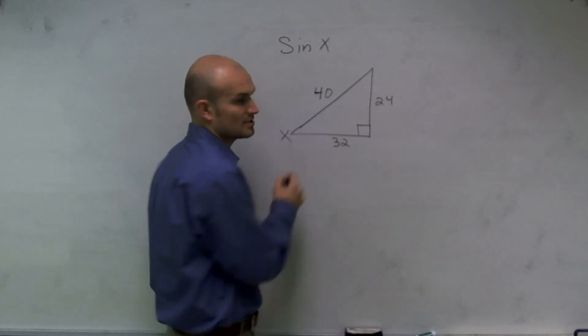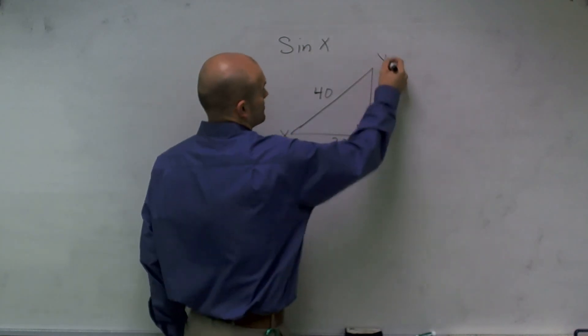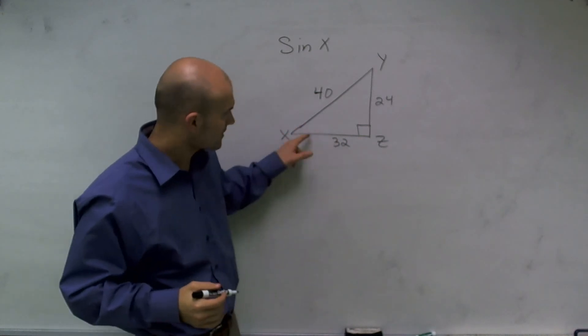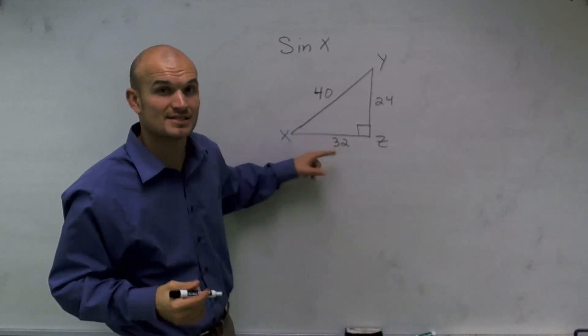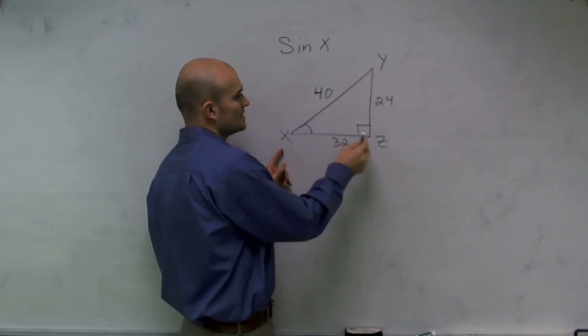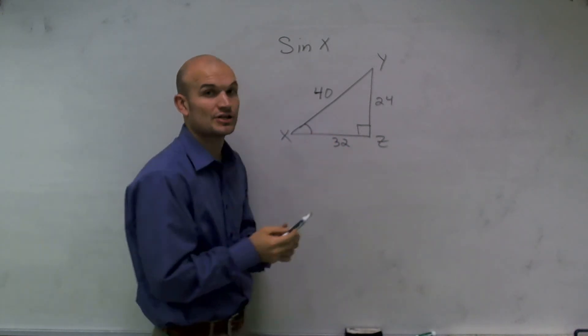I forgot actually to label these. This is going to be my x, y, and z. My angle x. 32 is going to be my adjacent side. The reason I know it's my adjacent is because your adjacent is always going to connect your angle with your 90-degree angle.